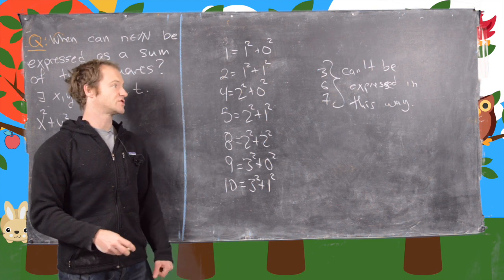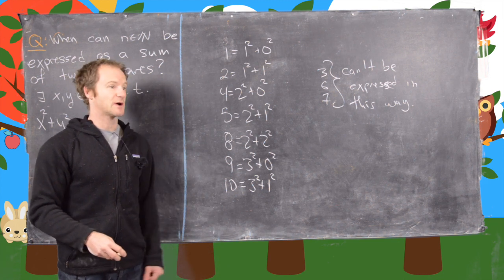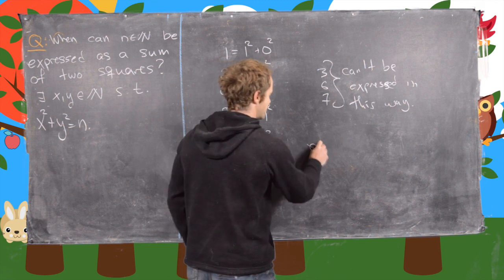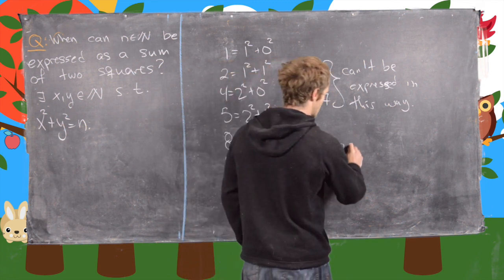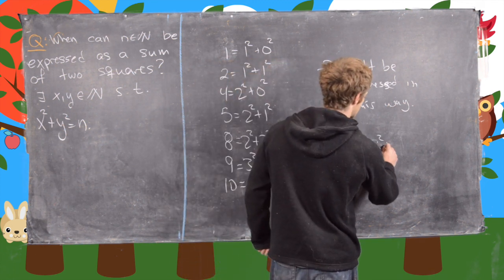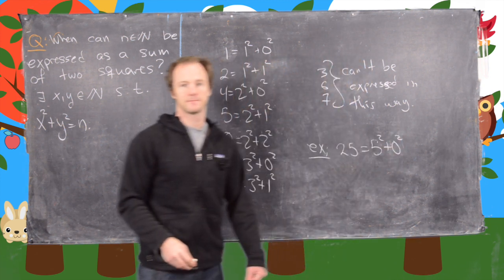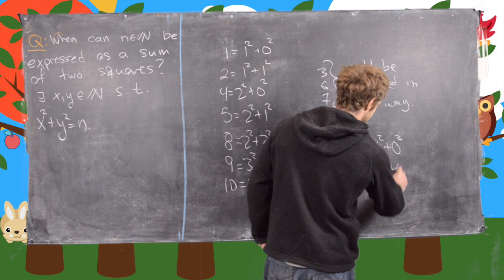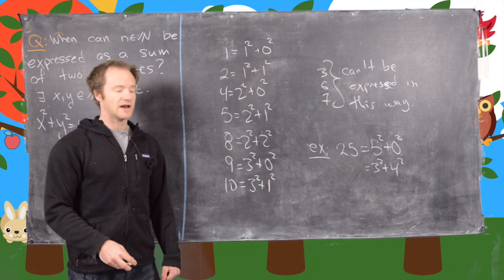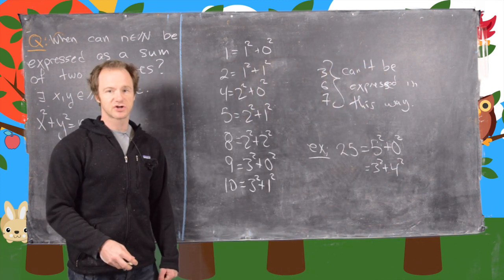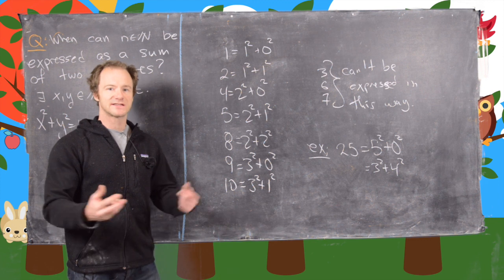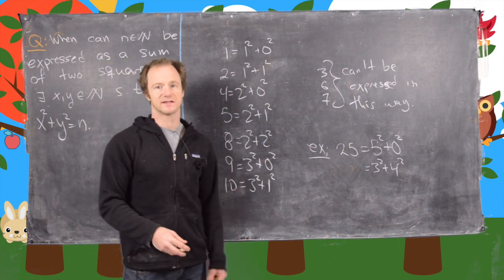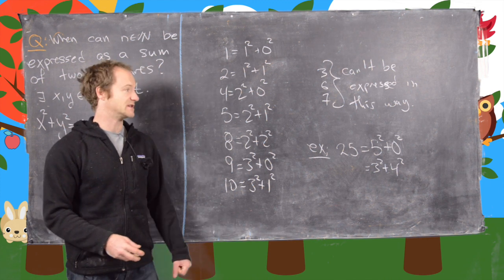In fact, some integers can be expressed more than one way as a sum of two squares. So let's look at a quick example of that. Notice that 25 is equal to 5 squared plus 0 squared, and also it's equal to 3 squared plus 4 squared. And in fact, if you have a primitive Pythagorean triple, then that's automatically an example of a number that can be expressed two ways as the sum of two squares. I'll let you think about the details for that.